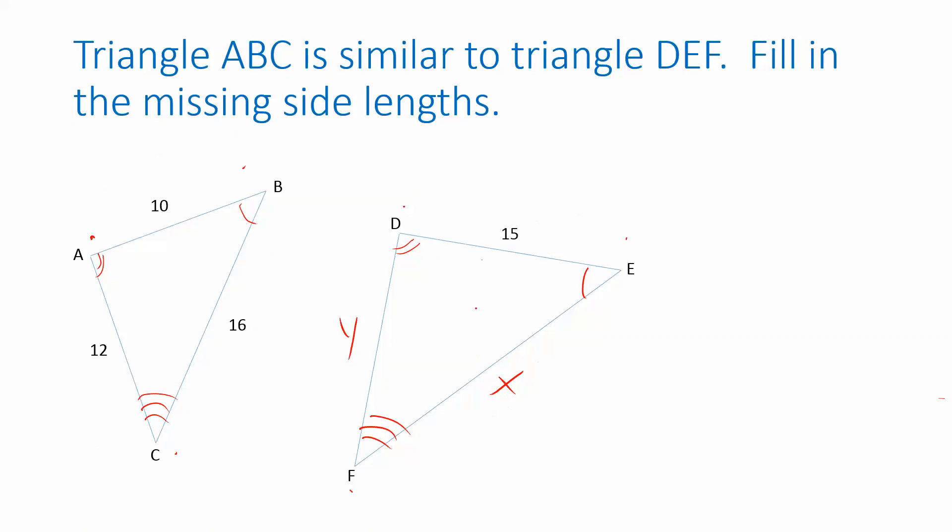And I can use that fact to figure out what X and Y are. Let's make a ratio that involves X, but not Y, so that I only have one variable. I could take the side length that goes between E and F, that's X, and the side length that goes between D and E, that's 15. And look at that ratio. And then ask, what are the corresponding side lengths in the other triangle?